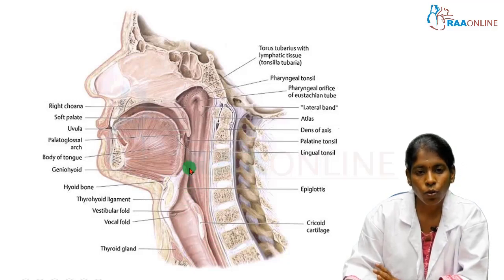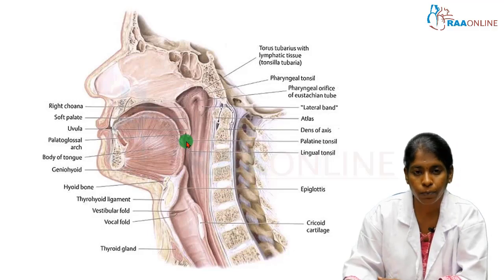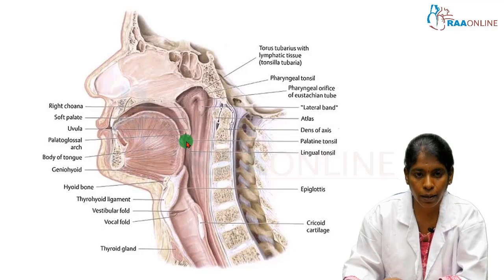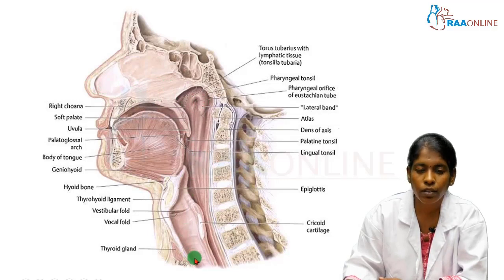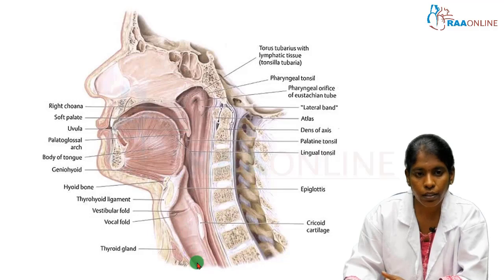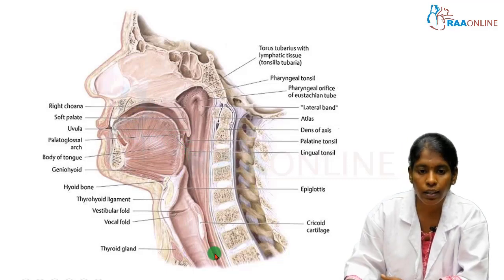The oropharynx forms the common pathway for the transmission of both air and food, but the pharynx can conduct only one at a time — either food or air. The air we breathe in passes through the nasal cavity, through the oropharynx, and enters the respiratory tract. Whereas food intake is chewed in the oral cavity, then enters the same oropharynx, and must enter into the esophagus.